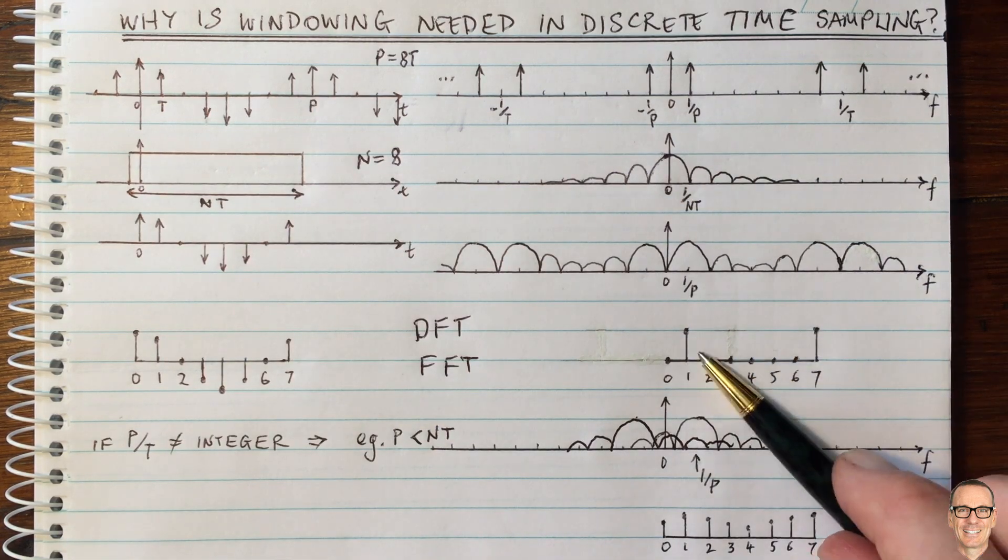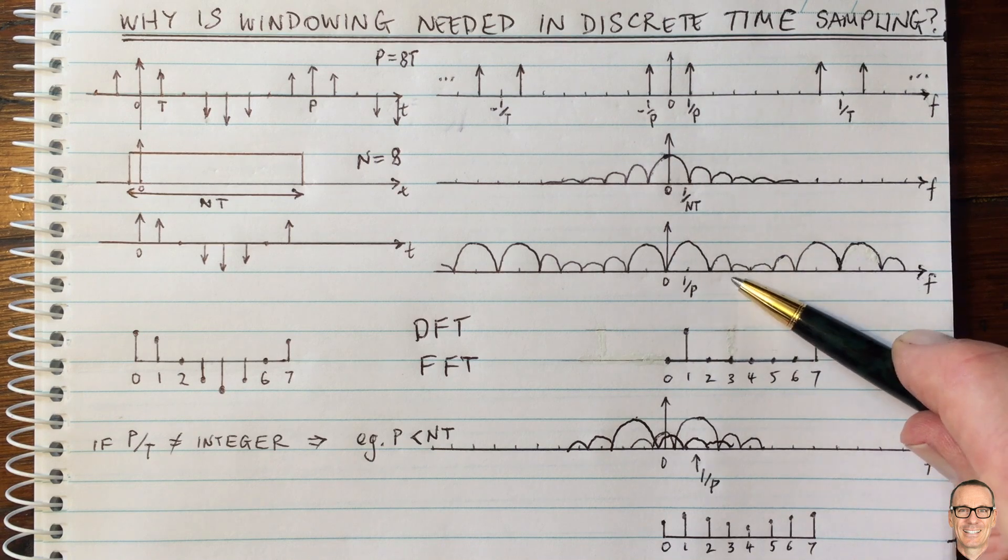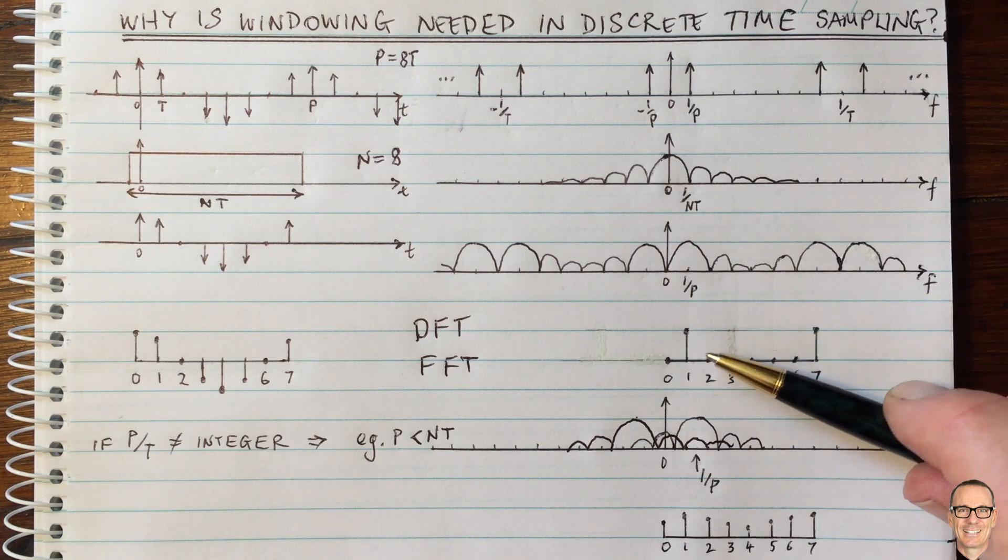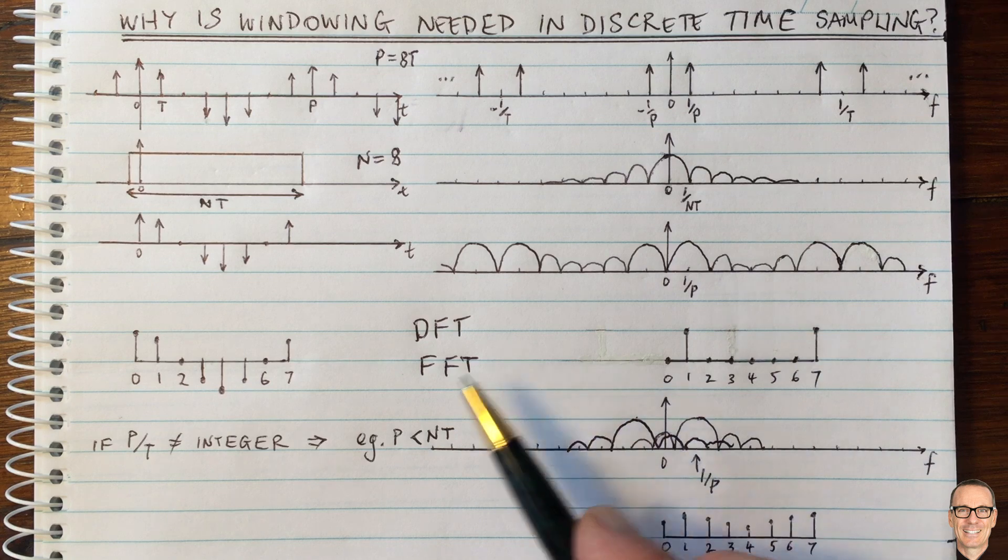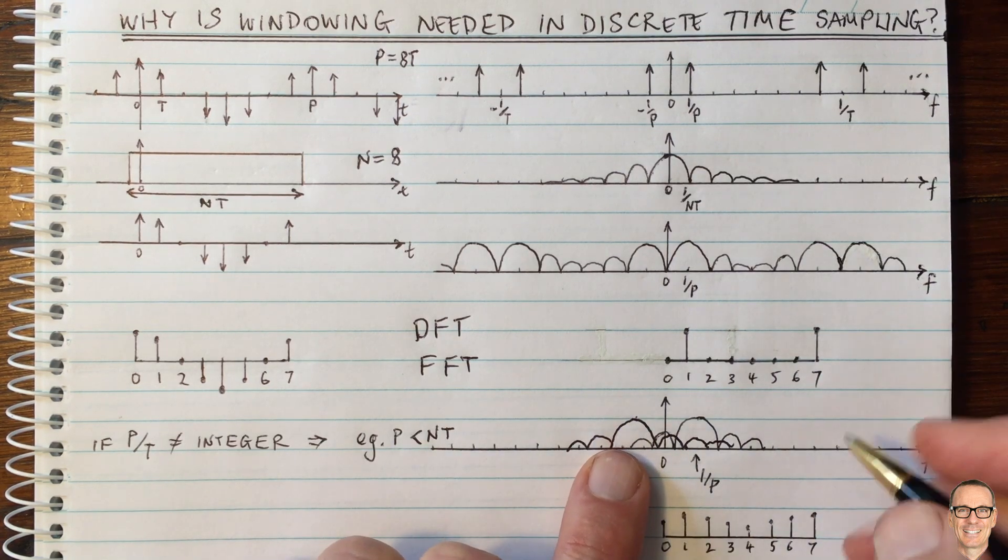It means that when we go to the discrete time version, we're not going to have this nice function anymore that just has these single spikes. Because here, these were zero everywhere that corresponded to the other values in our FFT. But now they are no longer zero anymore because they all overlap.